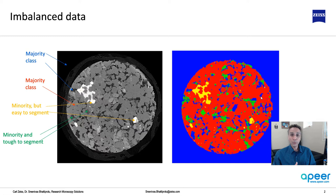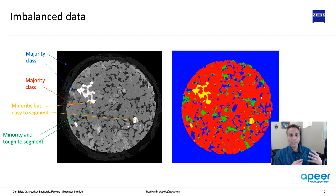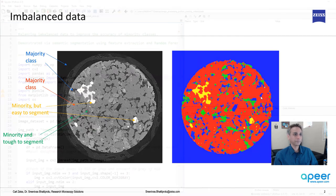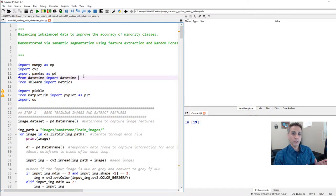One thing to note: I tend to explain every line of code, but we already did that in the last tutorial, so I recommend watching that to understand the segmentation steps. I'll focus more on balancing the dataset in this video, though I'll cover the basics as usual. Let's jump into our Spyder IDE and continue the coding. The first part of the code should be exactly the same as the one from the last video, so let's go through it at a faster pace.